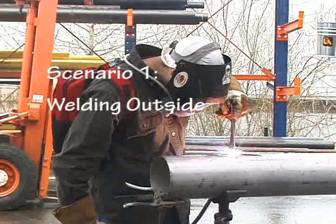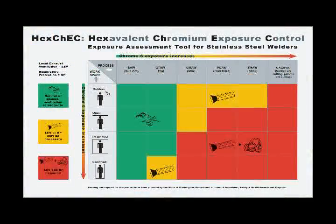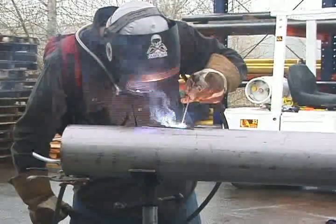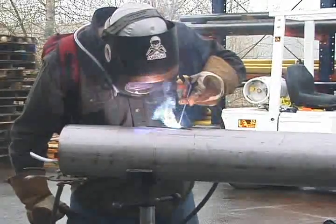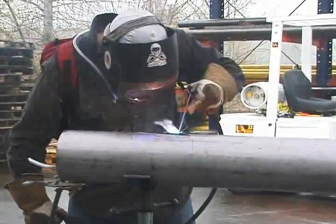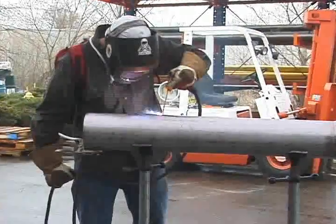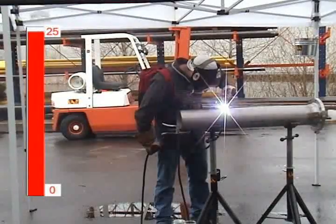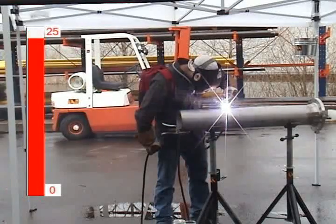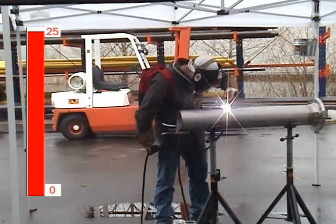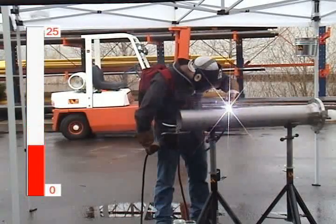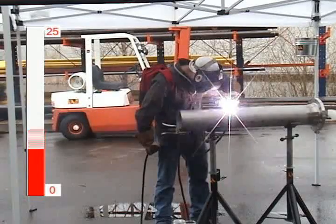Using the Chrome 6 exposure assessment tool, we know that stick welding is a smoky process that generates a lot of Chrome 6. Even if you are doing it outdoors with plenty of natural ventilation, you may still be overexposed. Shane is stick welding on 10 gauge 304 stainless. Notice how the red bar showing the exposure changes as the wind blows. We think of wind as ventilation, but wind is natural ventilation that we can't control. Sometimes gentle cross breezes can in fact increase your exposure to welding fumes.